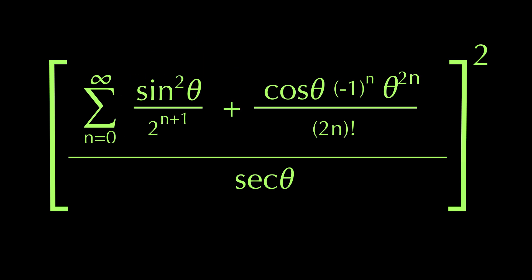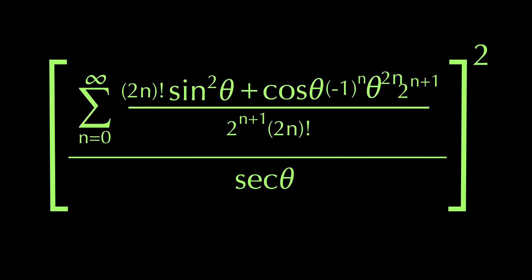We can now multiply like terms in order to create a single denominator, giving us this delightful looking thing. I also pulled this cosine out here. I don't know, just thought it would look a little bit better that way.